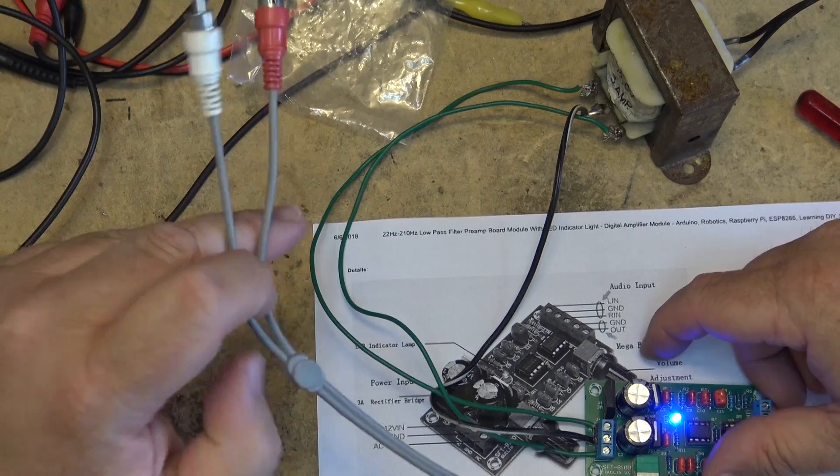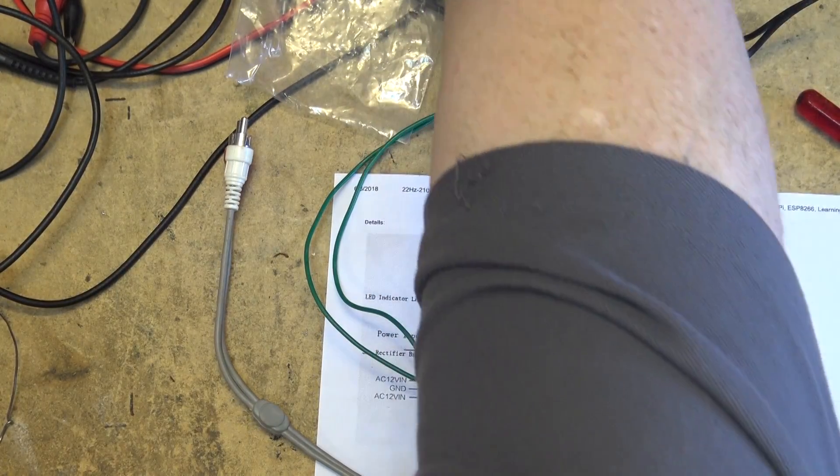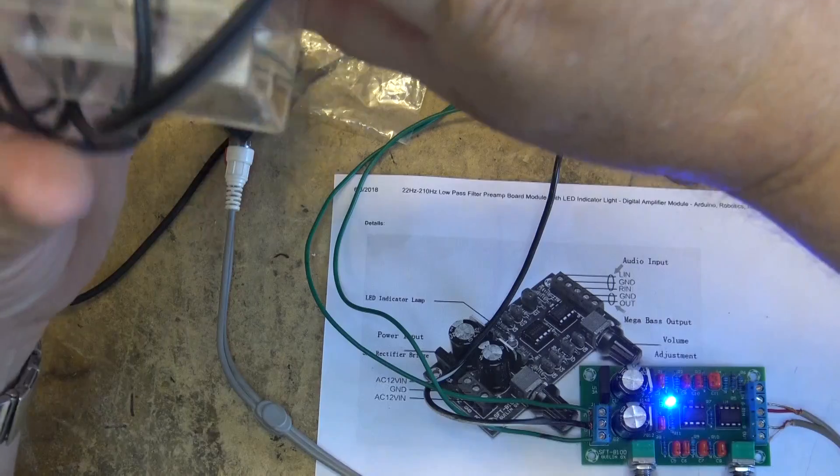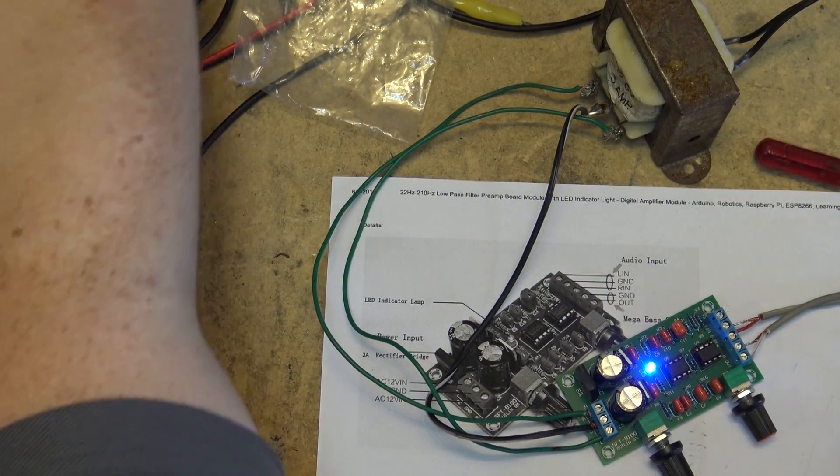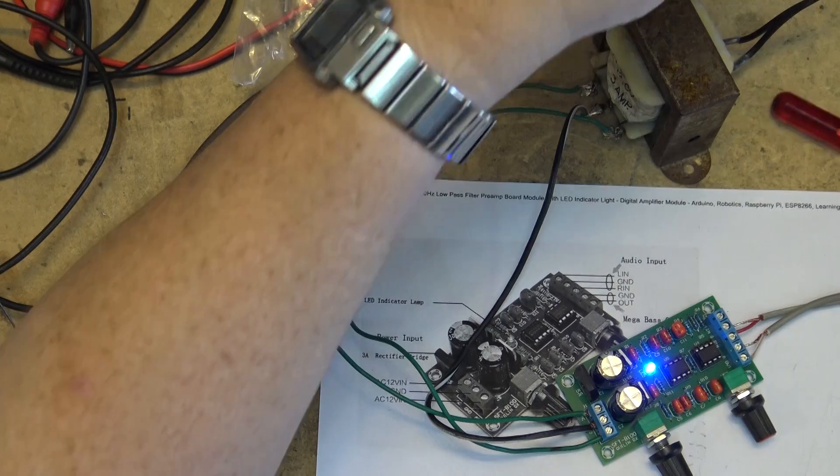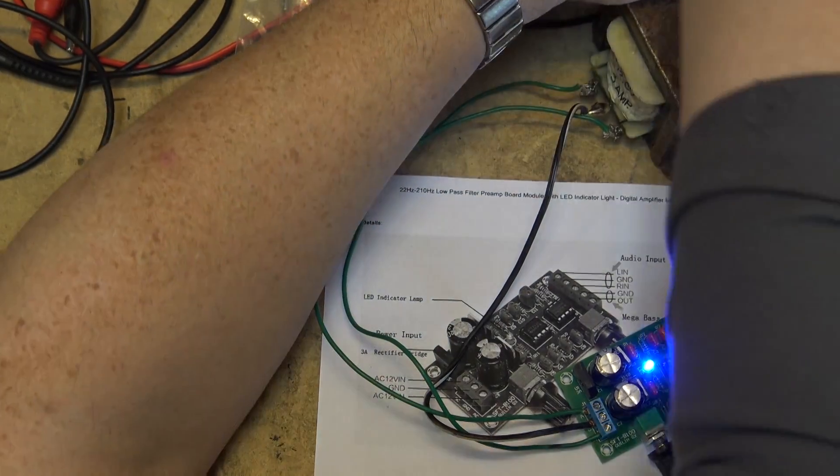Now I've got my input and my output. Let's take an input from my music source and I'll plug it into my amplifier. I'm going to couple the output from this into my amplifier input.